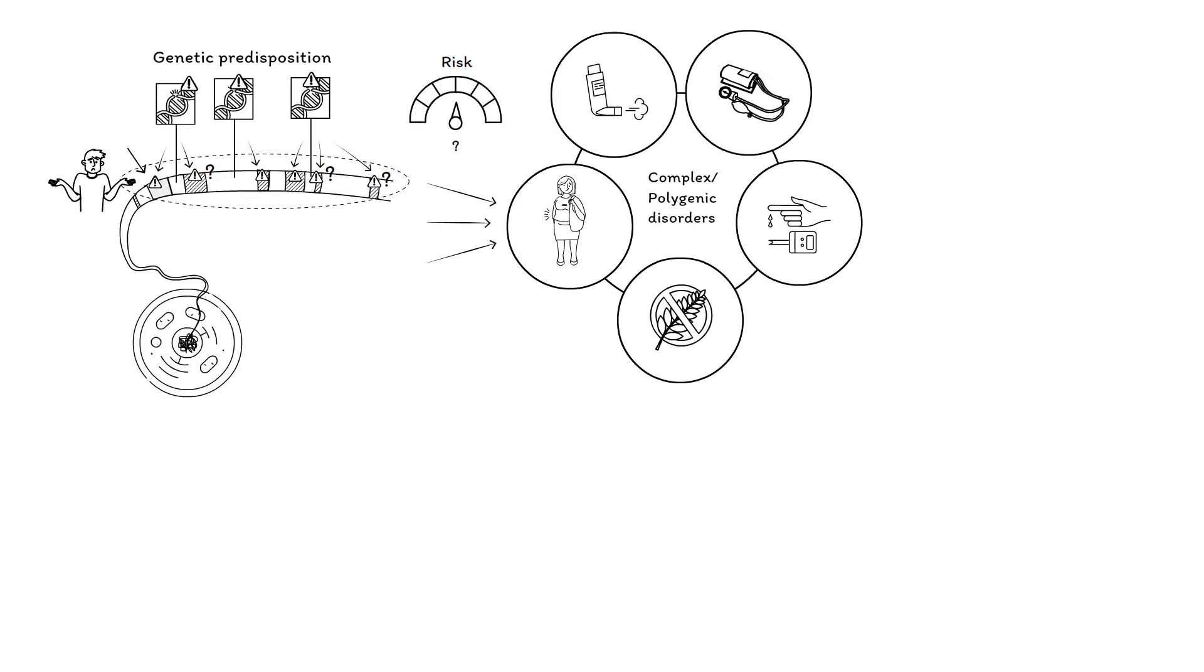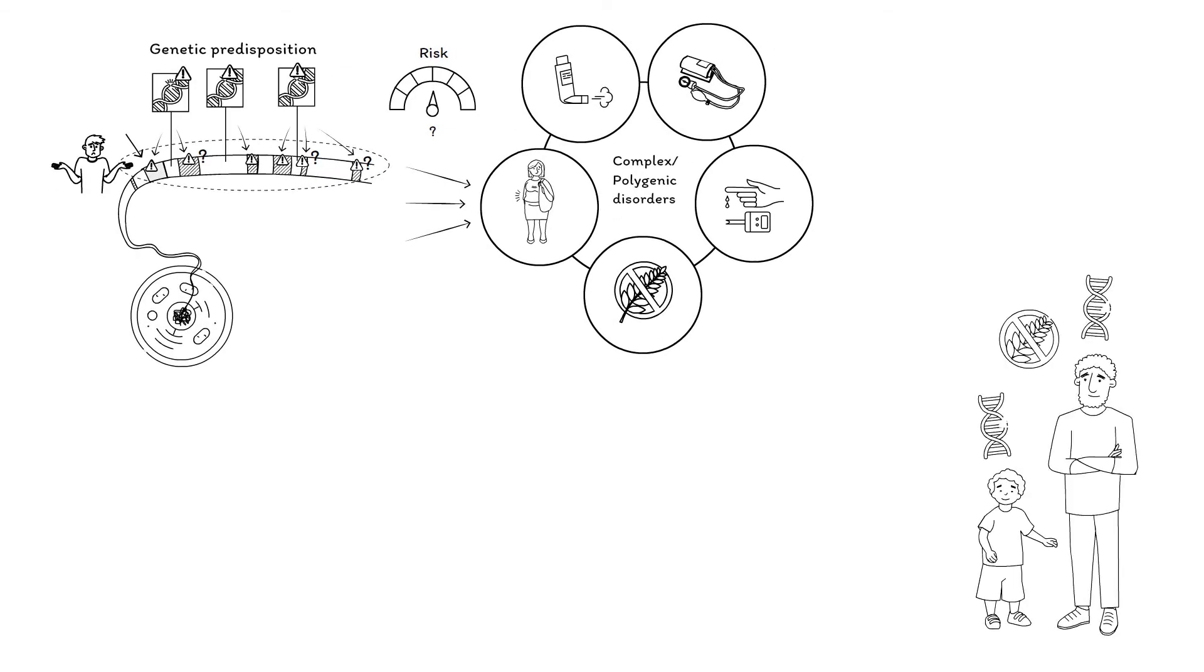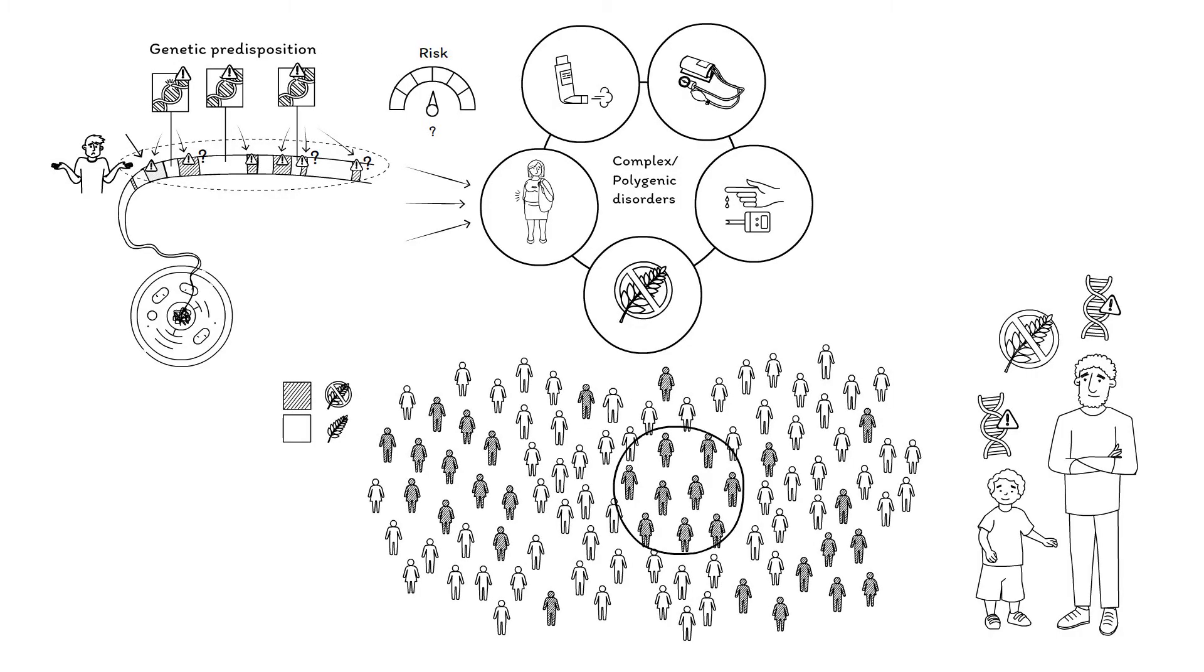Naturally, family members have more similar genomes and thus more overlapping risk variants, explaining why we observe the clustering of complex disorders in families.